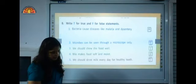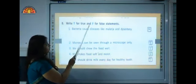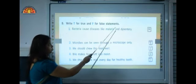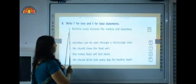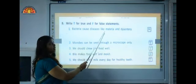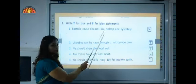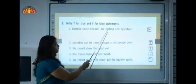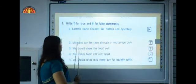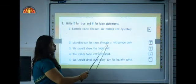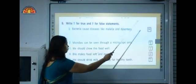Now we move to next exercise, Exercise number B. Write T for true and F for false statements. You have to write F or T in the given boxes. First, bacteria can cause diseases like malaria and dysentery. The correct answer: this is not a correct statement because malaria and dysentery are caused by protozoa. So put F over it. Microbes can be seen through a microscope only. Yes, this is the correct statement. So we will write T over here.